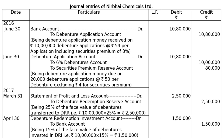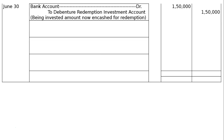Next, on the same day — before redemption we have to take back the money. That is on June 30th again: Bank Account debited to Debenture Redemption Investment Account, being invested amount now realised in cash for redemption. That is Rs. 1,50,000 in debit and credit each.